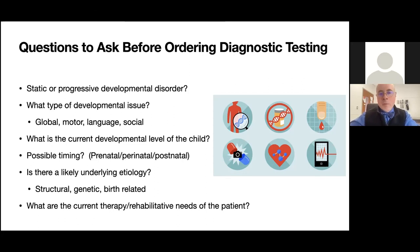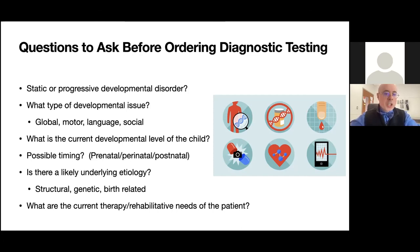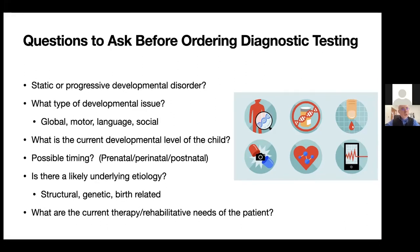Before ordering a diagnostic test, the questions I think about are: does this child have a static or progressive disorder? What type of developmental delay does this child have — motor, language, social, or global? What is the child's current level relative to their chronological age? When did any potential injury occur — prenatal, perinatal, or postnatal? Is there a likely underlying etiology — structural, genetic, or birth-related? And what will be this child's needs for rehabilitation and therapy?